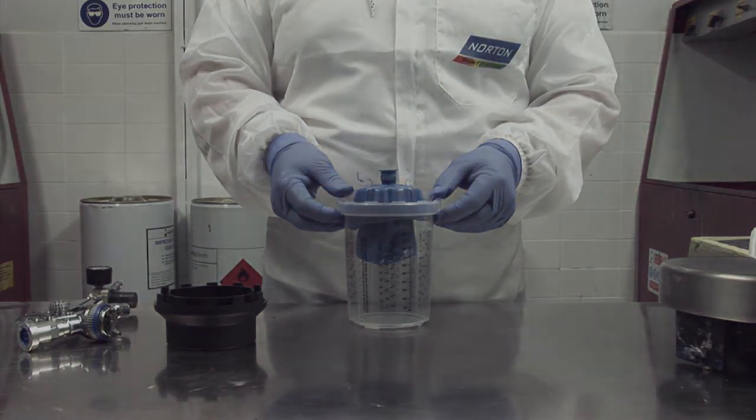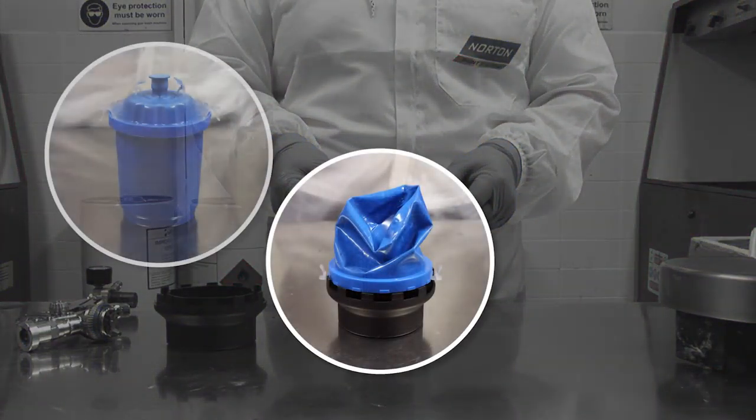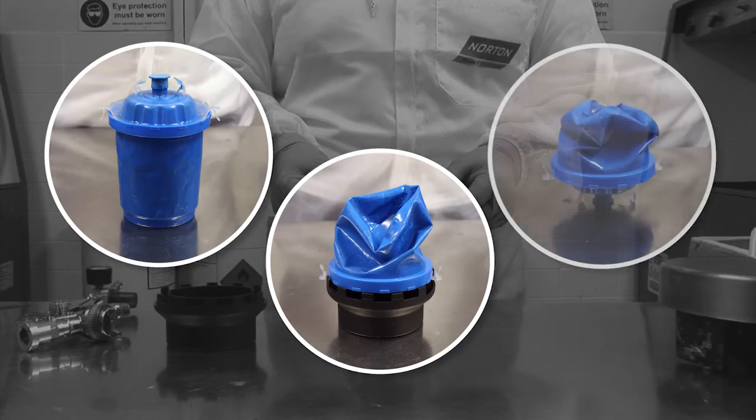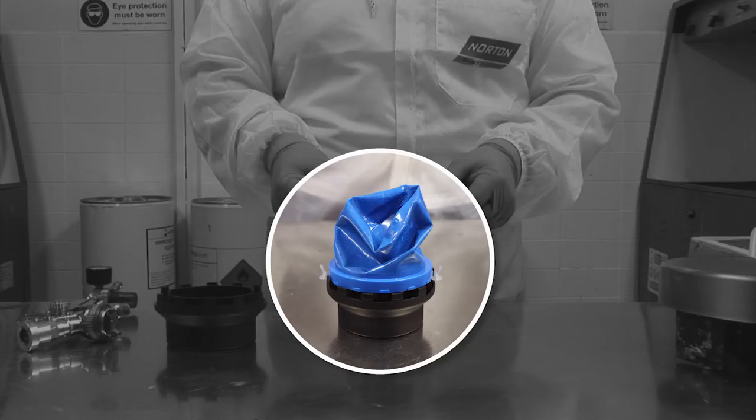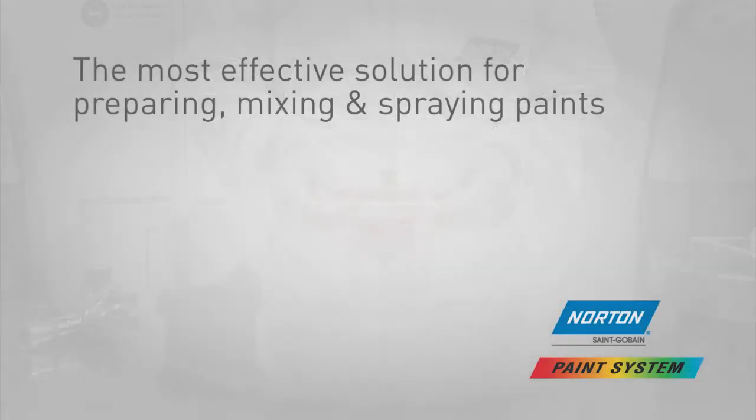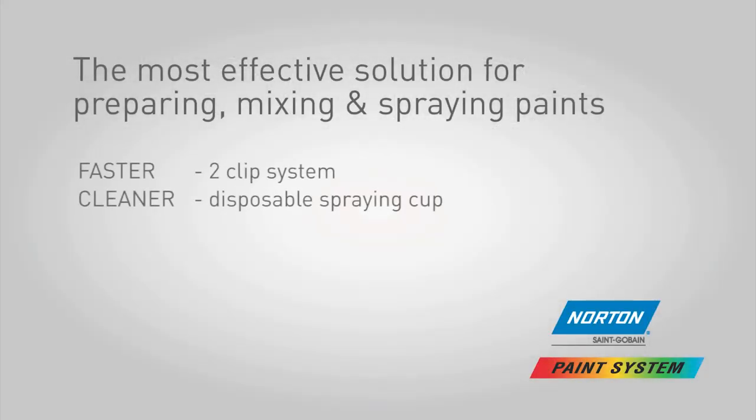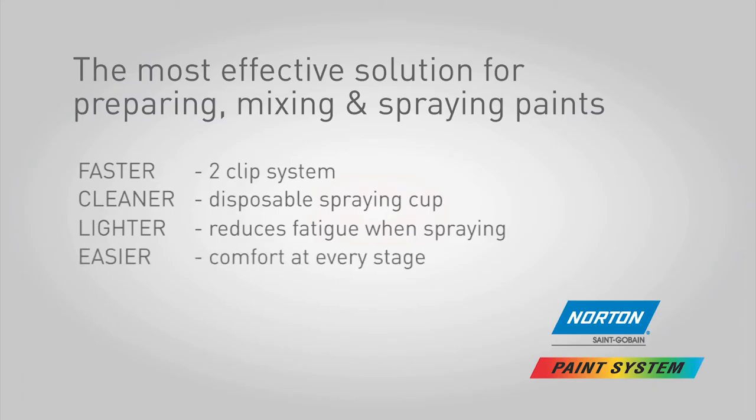When you've finished, any unused paint can be stored in many different ways for up to six months. Norton recommends using the holder provided to store upside down, keeping the filter moist and ready to use again. If you aren't saving the paint, just throw the disposable cup away. It's as simple as that. And that's the beauty of the Norton paint system.